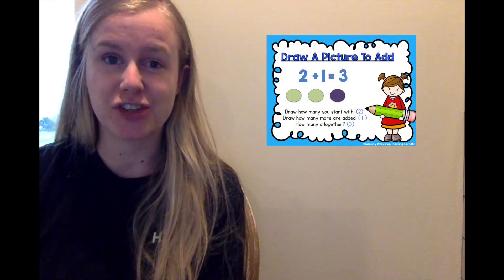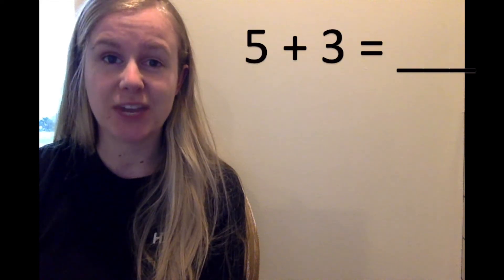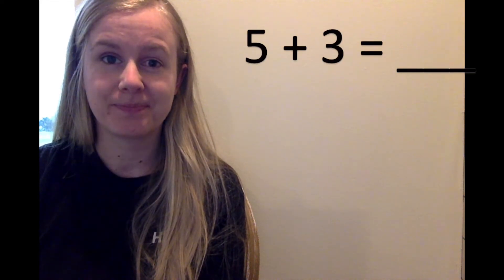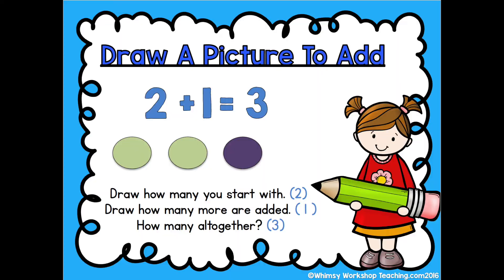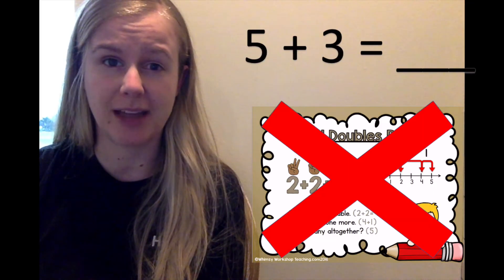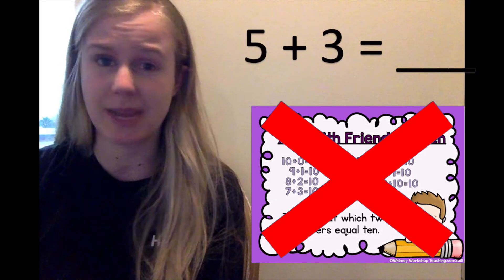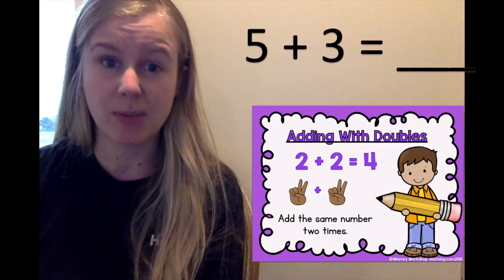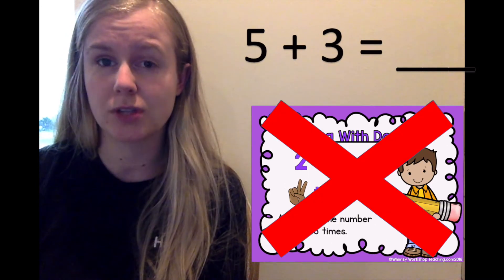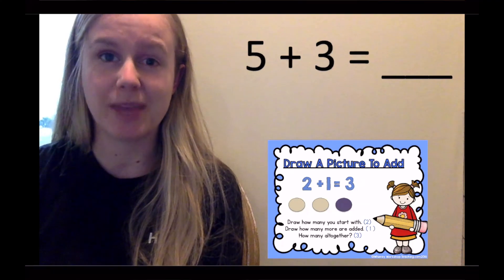If I see two parts that aren't friends of ten, they aren't doubles, and they're not doubles plus one — they're not next to each other on the number line — or if I'm just having trouble and want to check my work, I can use my strategy: draw a picture to add. Five plus three equals blank. I can draw a picture to add. Five and three are not next to each other on the number line, five and three do not make ten, and it's not a double. These are different numbers. So I'm going to draw a picture to add.